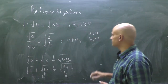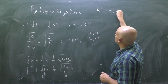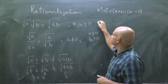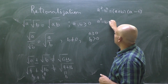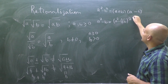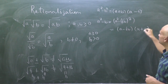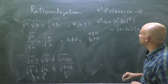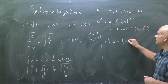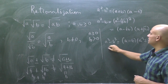General identities you must know: a squared minus b squared equals (a plus b)(a minus b). Also, a squared minus b can be written as (a minus root b)(a plus root b). And a cubed minus b cubed equals (a minus b)(a squared plus ab plus b squared).